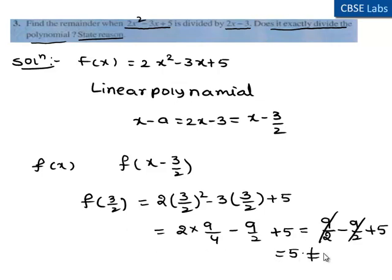As the remainder is 5, we say that 2x - 3 is not a factor of f(x).